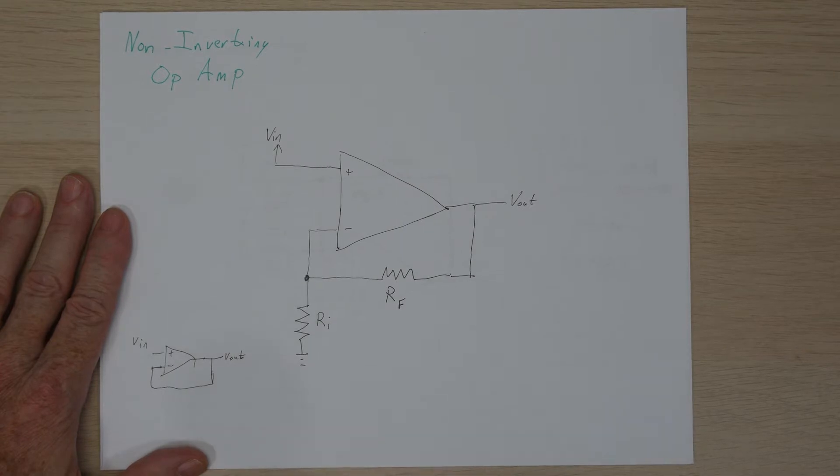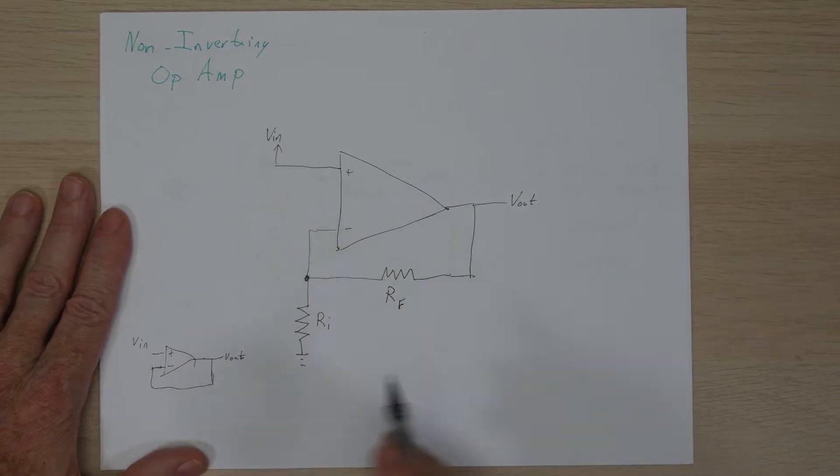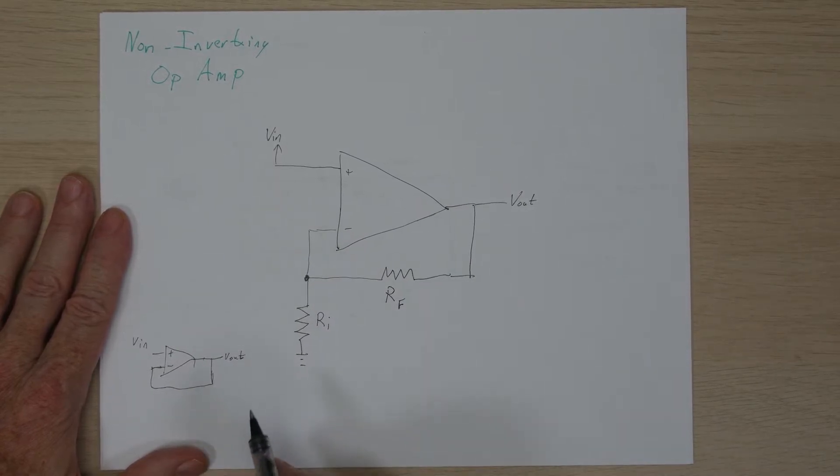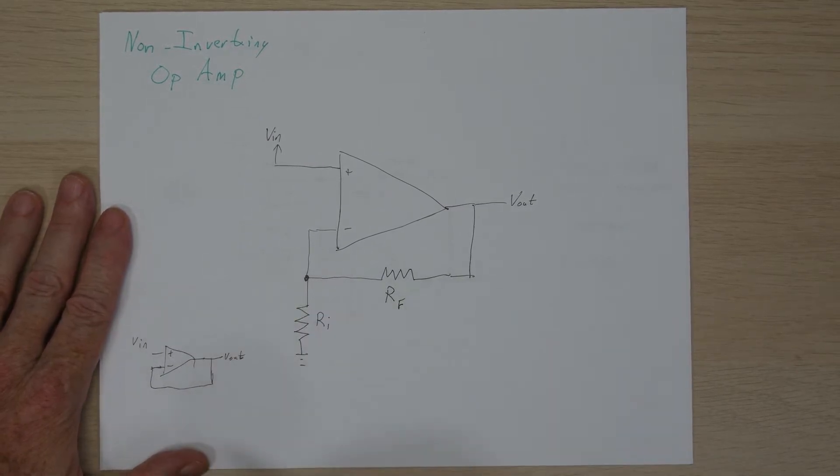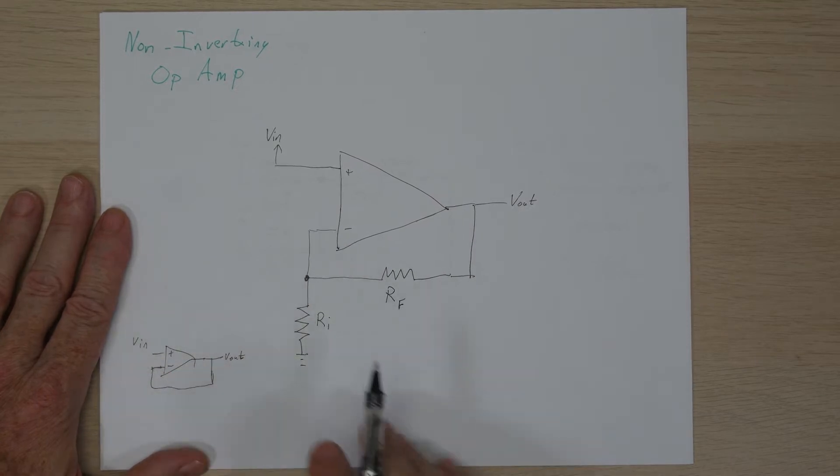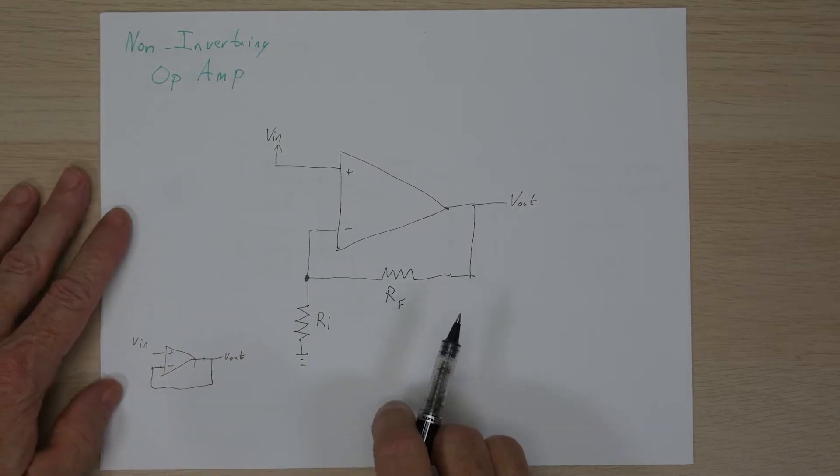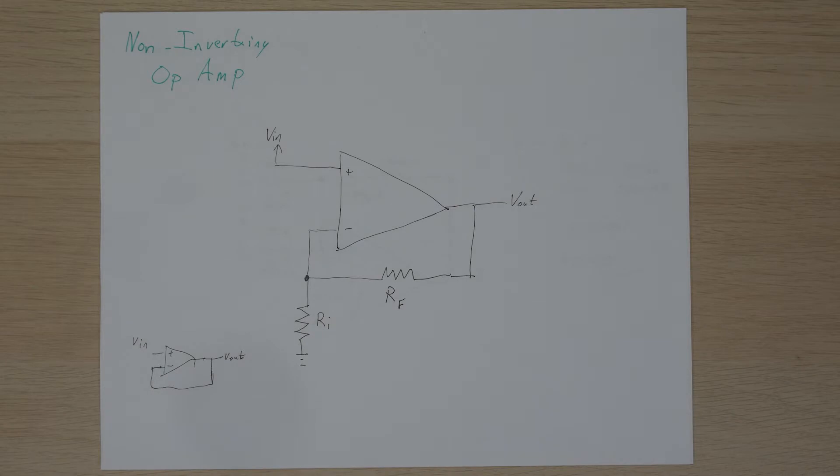This is typically called a unity gain or a buffer, where it does nothing more than keep the same voltage on the input as the output. The reason you'd want to use something like this is that you can have much more current on your output, and you'll have a very high impedance on your input, meaning it won't load down the rest of the circuit, and you could have many of these buffers, say, all hooked in common to the same voltage output without seeing a drop in voltage.